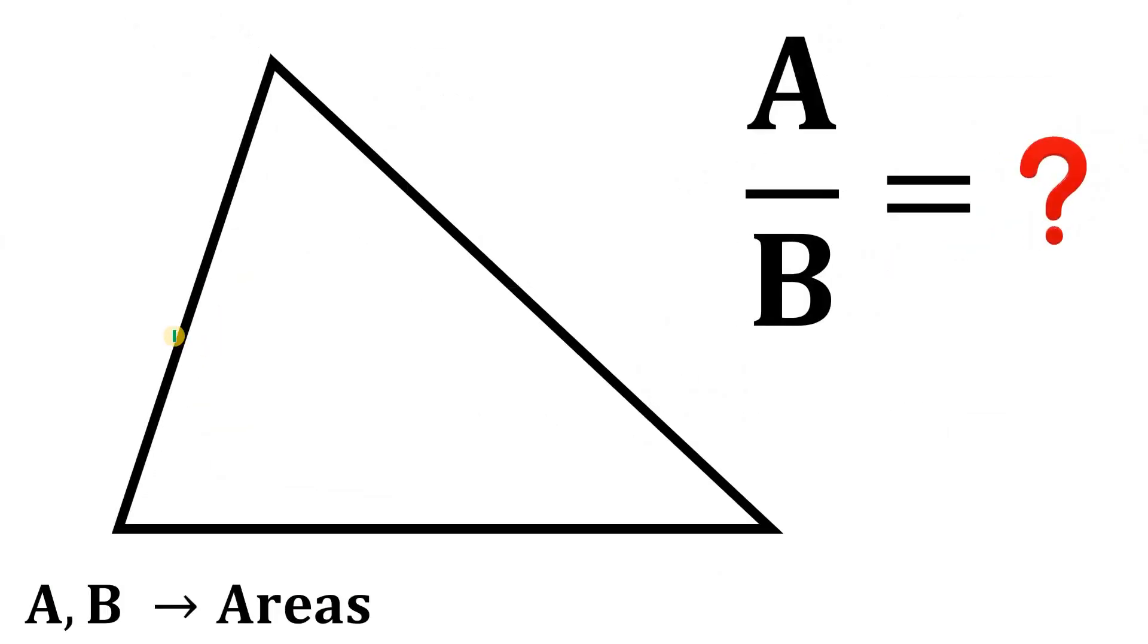So let's start with a triangle. Now, let's draw a segment that divides this side as 3x and 2x. And also, it divides this side as 5y and 7y. Now, the upper triangle, the area of this, let's label this as A.